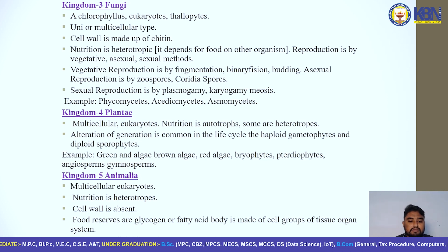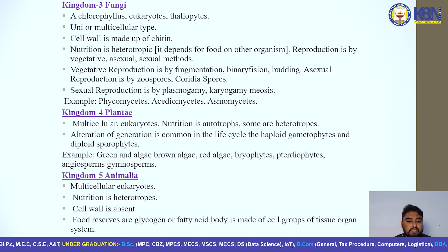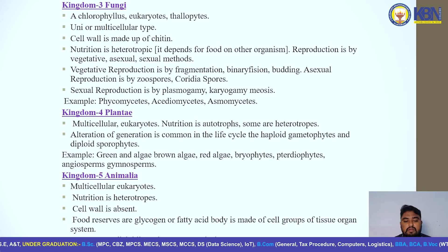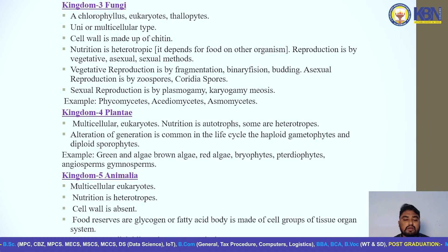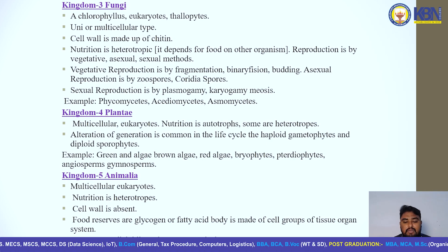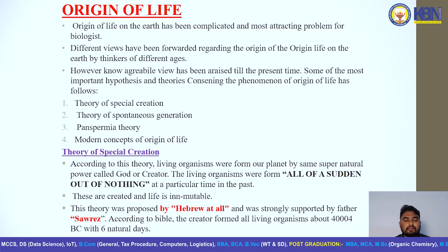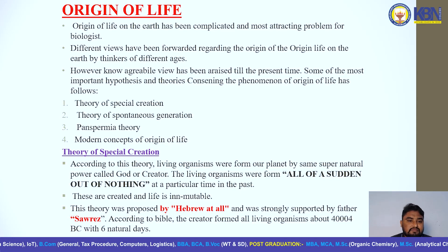The fifth and last kingdom is Animalia. Animalia are multicellular eukaryotes. Nutrition is heterotrophic. The cell lacks a cell wall. Food reserves are glycogen or fatty acids. The body is made up of cells, tissues, organs, and organ systems. Symmetry may be radial, bilateral, or asymmetrical.